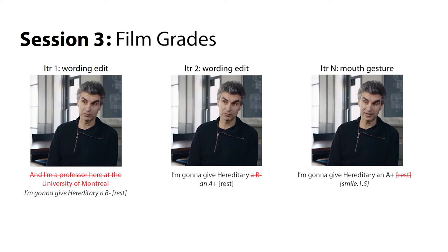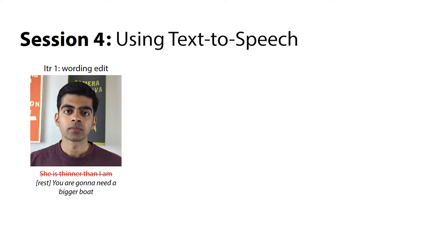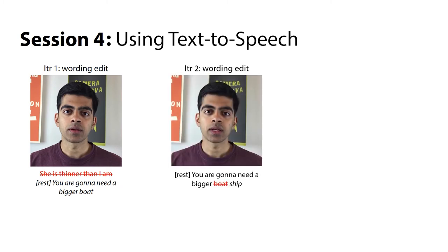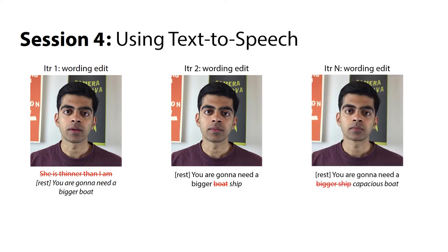Our tool focuses on video synthesis and can use speech audio from many sources. We've been using a library of the actor's real voice recordings, but we can also use neural voice cloning or, as in this case, generic text-to-speech. Here we start by making the actor quote a line from the film Jaws: 'You are gonna need a bigger boat.' We change the wording a little: 'You are gonna need a bigger ship.' After more iterations, we settle on: 'You are gonna need a capacious boat.'